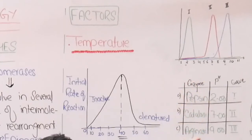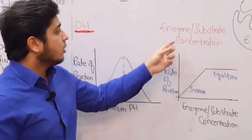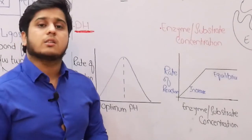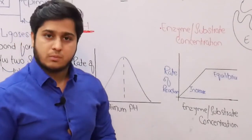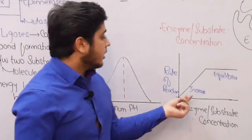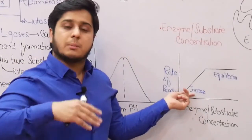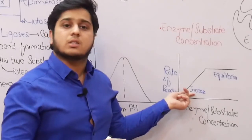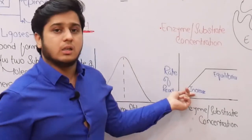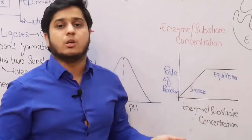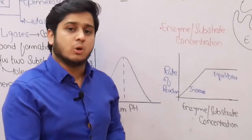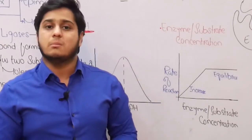The answer will be arginase enzyme. Regarding enzyme and substrate concentration: initially, as concentration increases, the rate of reaction increases. But further increase in concentration has no effect — equilibrium is reached, and further increases in enzyme or substrate concentration cannot increase the activity of the enzyme.